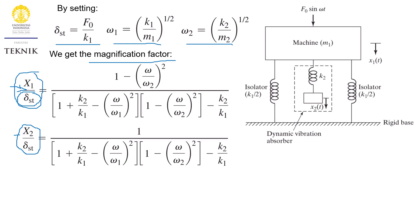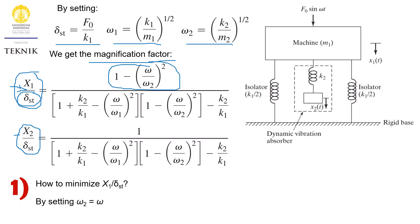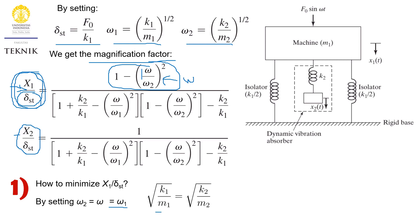The first question is: is there a strategy to minimize the value of X1 over static deflection? Yes, there is. If we look closely at this equation, in the numerator we have the term (1 minus omega divided by omega2). If we set omega2 — the natural frequency of mass 2 — to be equal to omega, that term becomes (1 minus 1) = 0. Most commonly in the design of vibration absorption systems, we also set omega1 equal to omega, arriving at a relation between mass 1 and mass 2, and the ratio k/m for both masses must be equal.